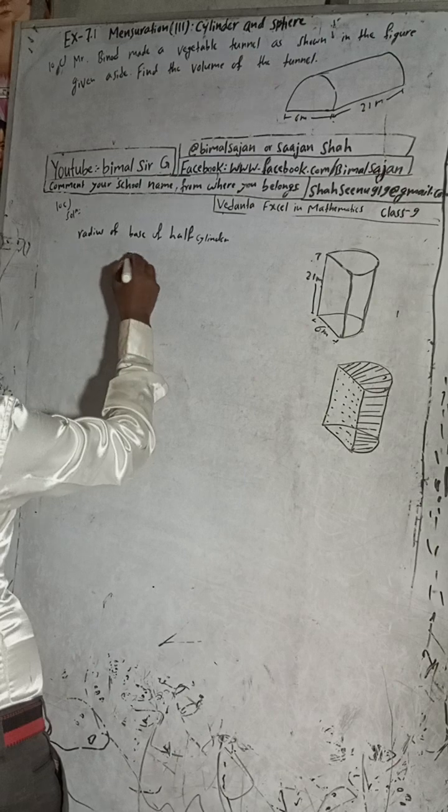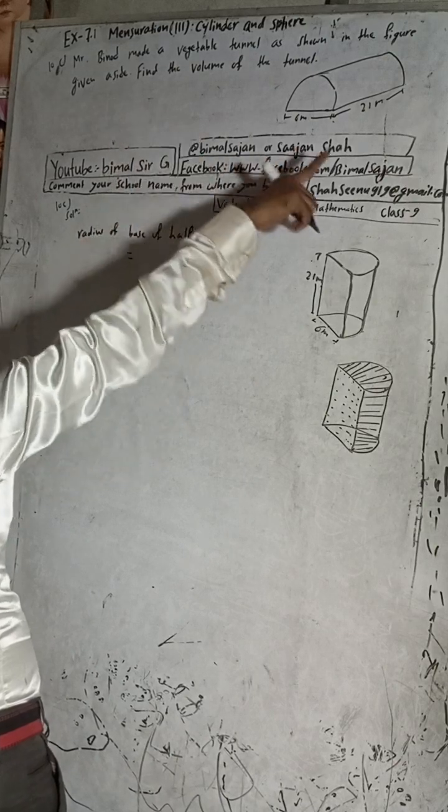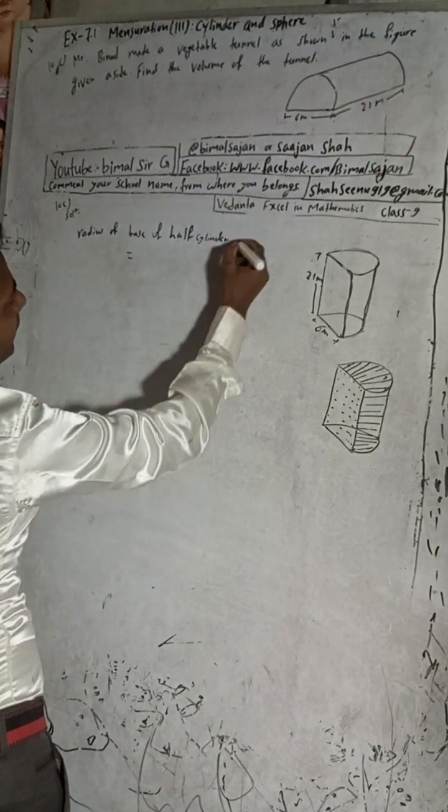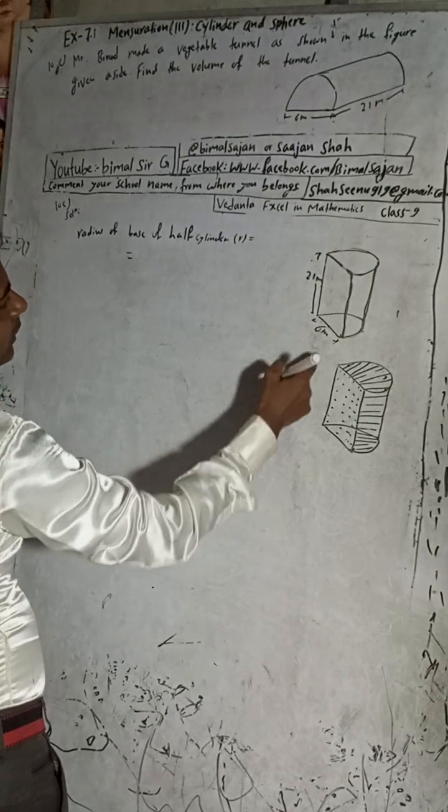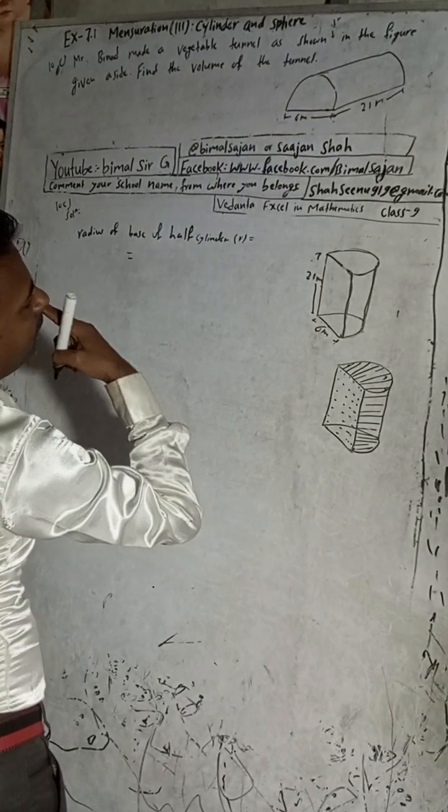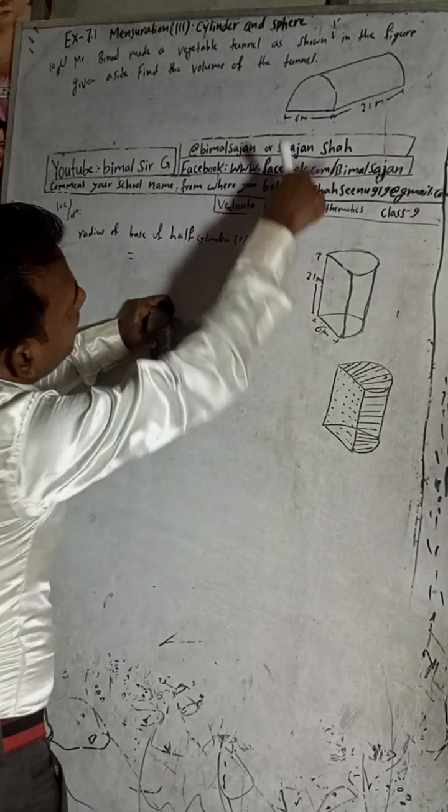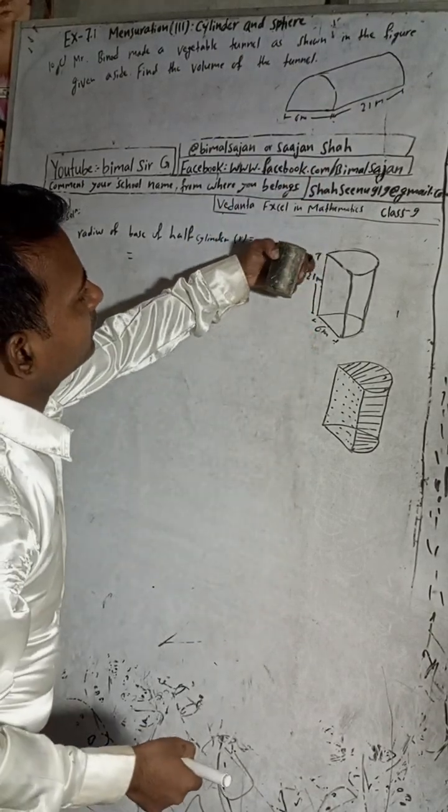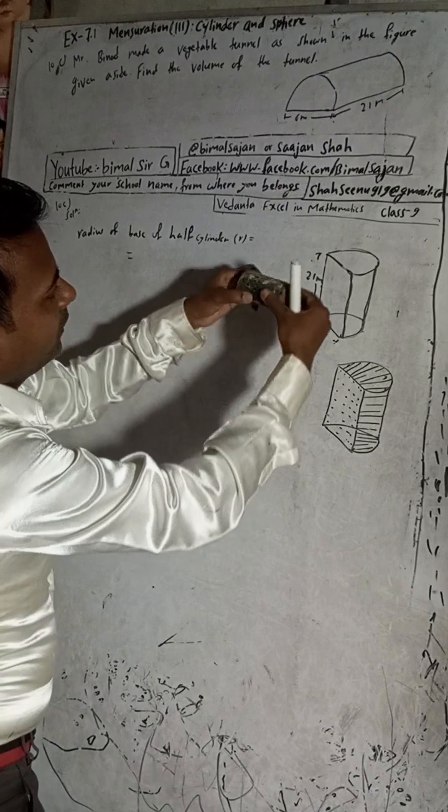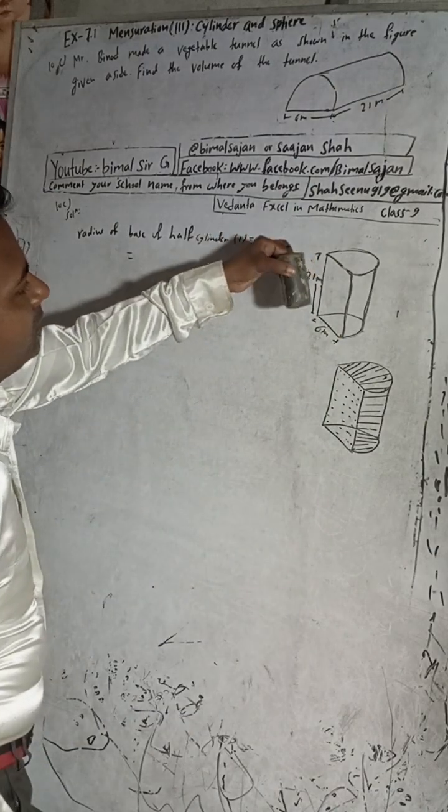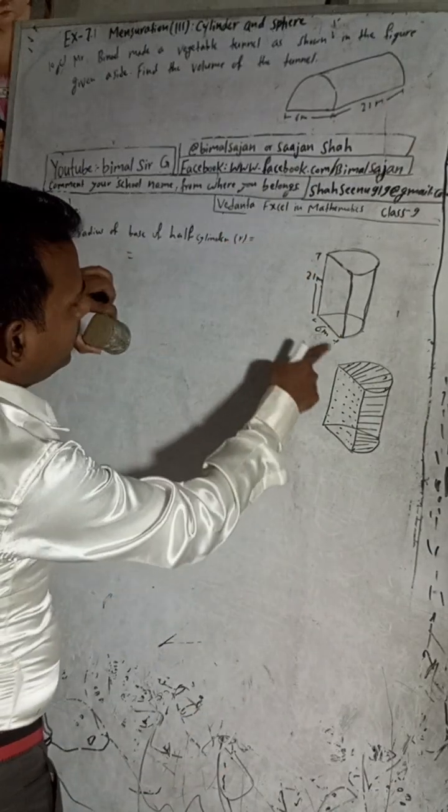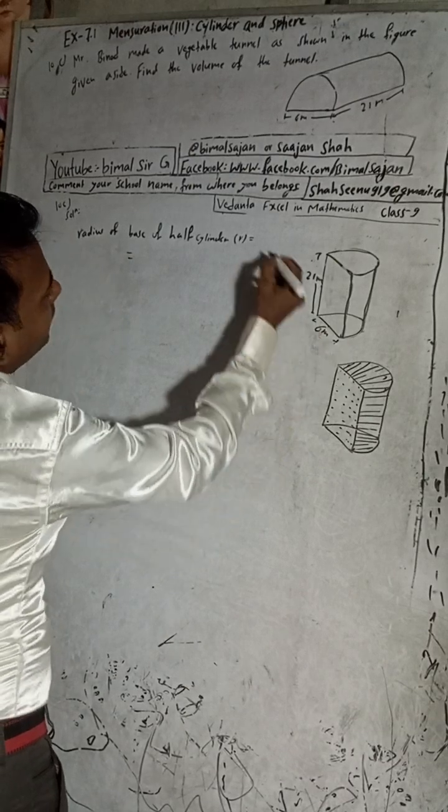This is the tunnel. So this is given how much? Radius - the diameter is 6 cm, so it will be half. The same figure I have made like this. This is it, like this. And now it is vertical, so this diameter is 6.